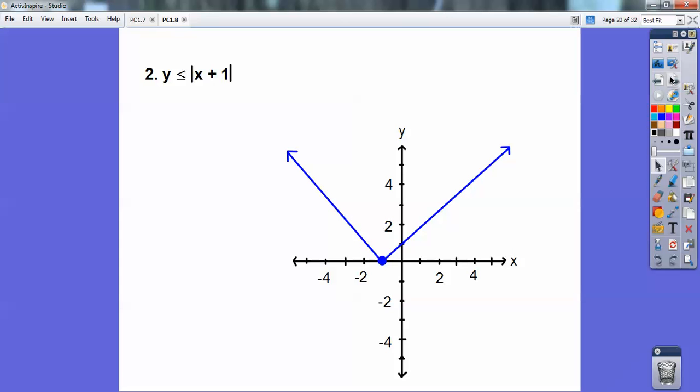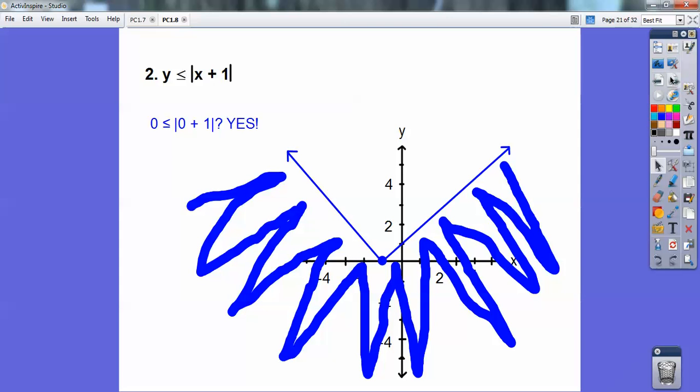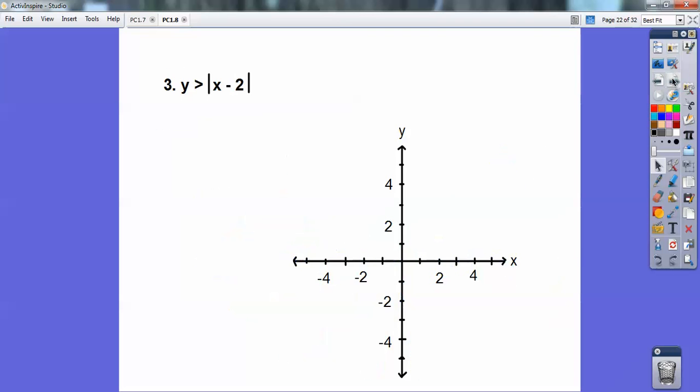And then we're going to test 0, 0. 0, 0 makes it true then. Then we shade that side that 0, 0's on. Since 0, 0 is on the outside, then we shade the outside or underneath it anyways. If it was no, I'd shade the inside.